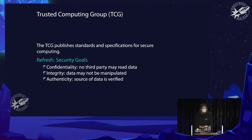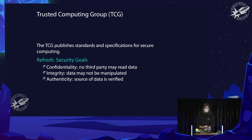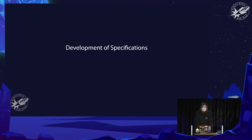The three core security goals are: confidentiality — keeping data secure from unauthorized access; integrity — ensuring data cannot be manipulated without detection; and authenticity — validating that data comes from the source it claims. That's what all these specifications and much of security is basically based on.